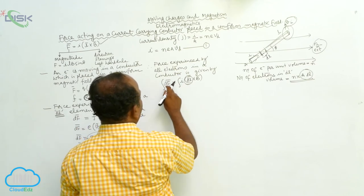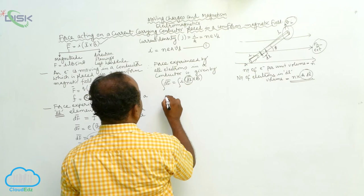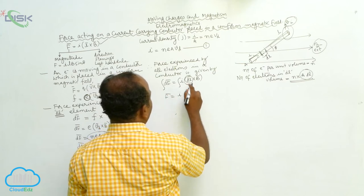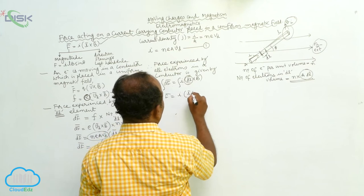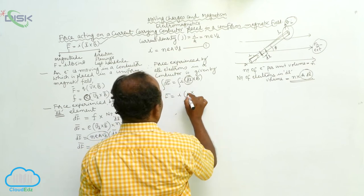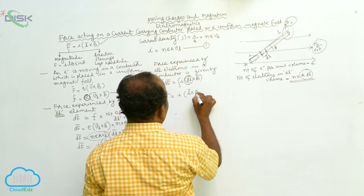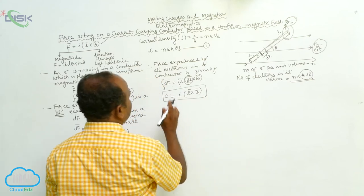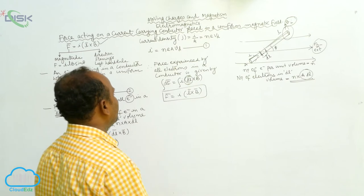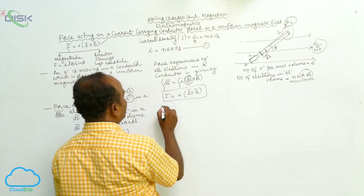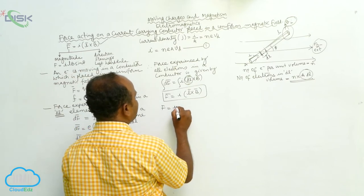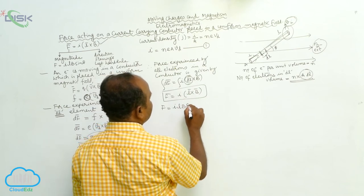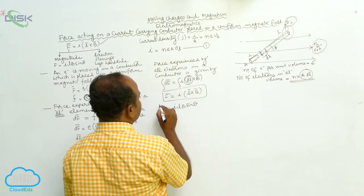Therefore, F̄ equals I into L̄ cross B̄. This is the total force, and it has a magnitude F = ILB sinθ.